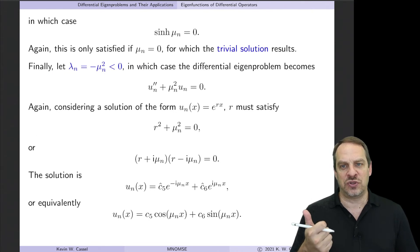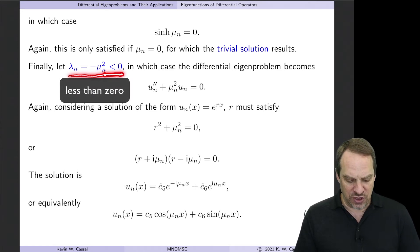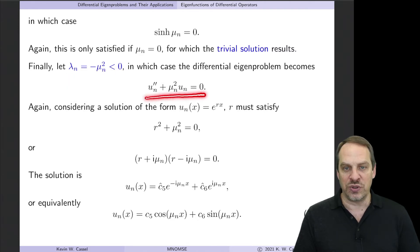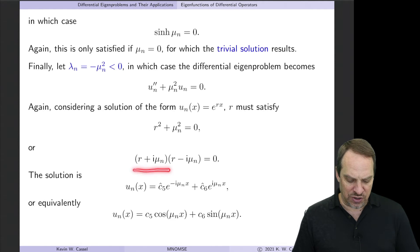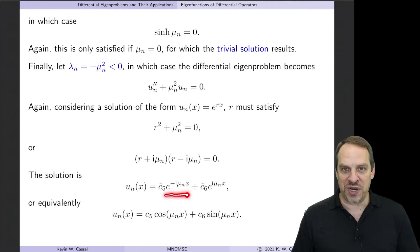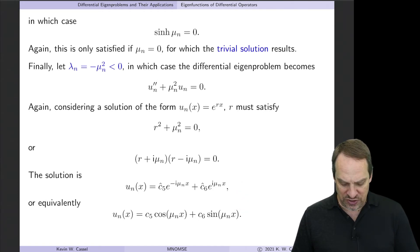So let's consider the case when lambda is negative. I'm going to say lambda is now minus mu_n squared, which is always negative regardless of the sign of mu. Then we have u double prime plus mu_n squared u equals zero. When we substitute in e to the rx, we get r squared plus mu squared equals zero, which factors into r equals plus and minus i·mu_n. So our general solution is constants of integration times e to the ±i·mu_n·x. Again, for a finite domain, we prefer the equivalent trigonometric form — because of the presence of i's, this is now cosine and sine of mu_n·x.